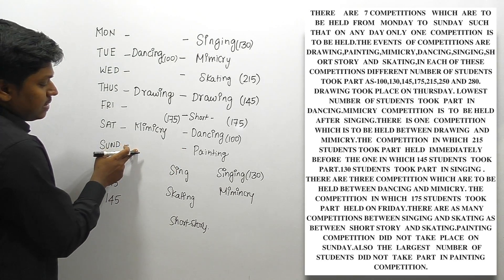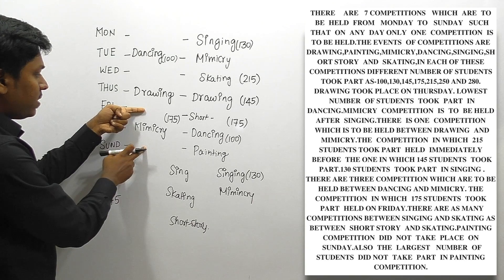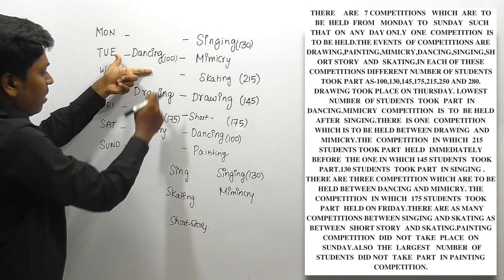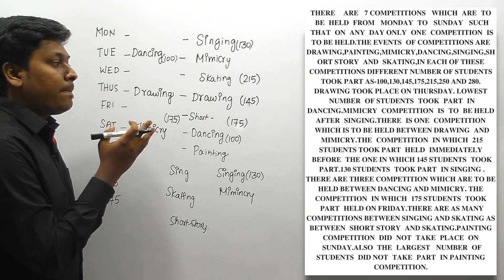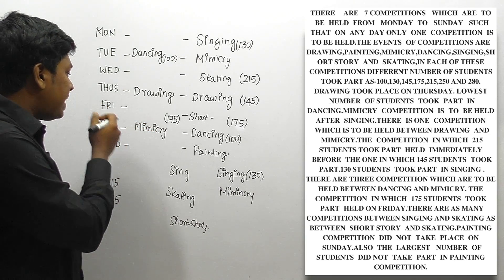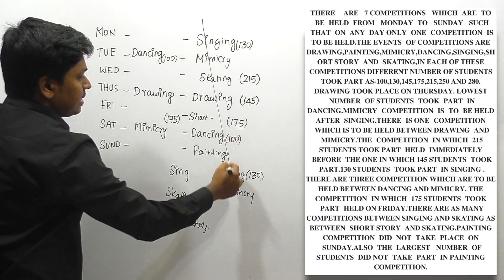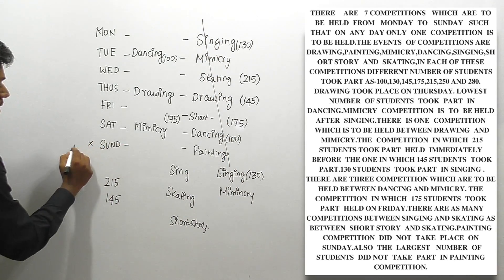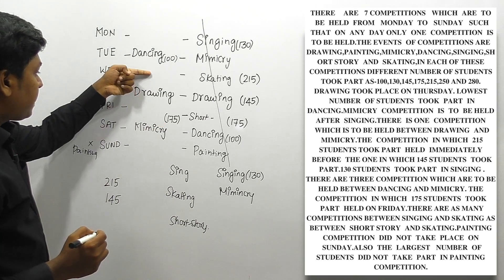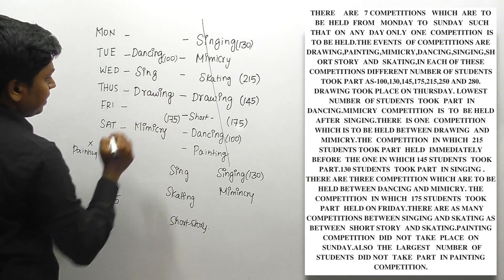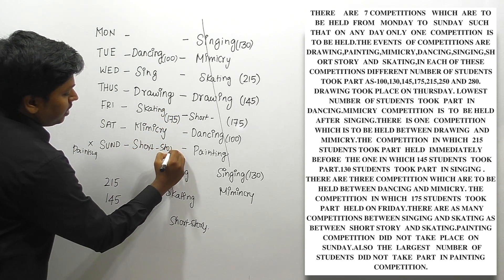In condition two, skating could be placed in various positions with singing and short story on either side. However, the next clue states painting did not take place on Sunday. In condition two, the only valid placement requires painting to go on Sunday, which is eliminated. So condition two is ruled out, and we can confirm condition one is the correct arrangement.